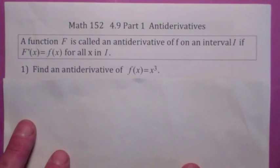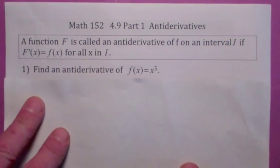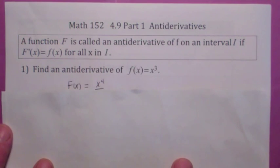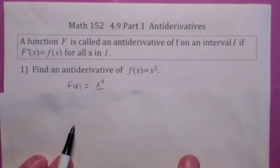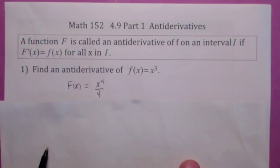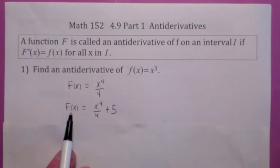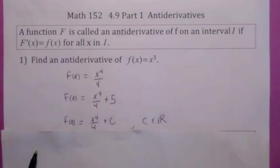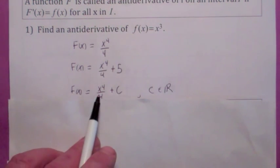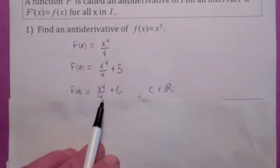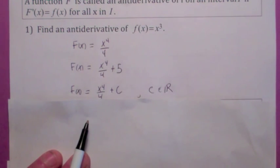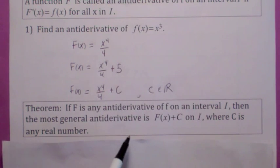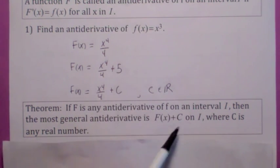I'm looking for a function whose derivative is x cubed. When you take the derivative of big F, you get little f. Some of you would say x to the 4th, but the derivative of that would be 4x cubed. So x to the 4th over 4 would be the function. But there are lots of functions — x to the 4th over 4 plus any constant C also works, because the derivative of a constant is 0. We call x to the 4th over 4 plus C the most general antiderivative of x cubed. The most general antiderivative is any antiderivative plus some arbitrary constant.